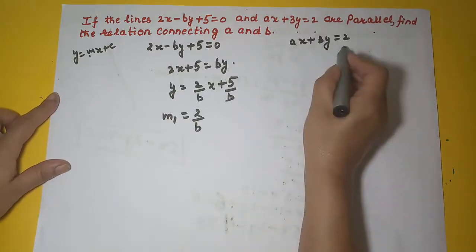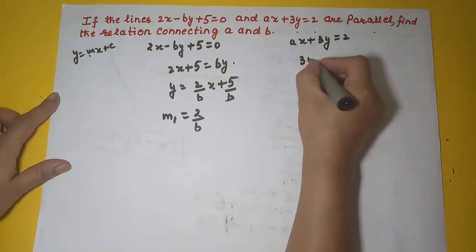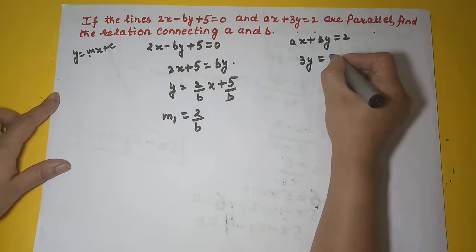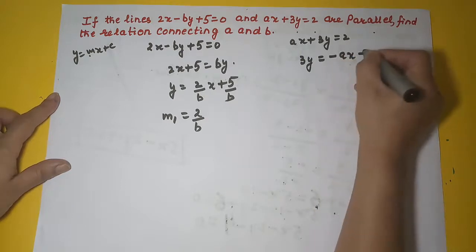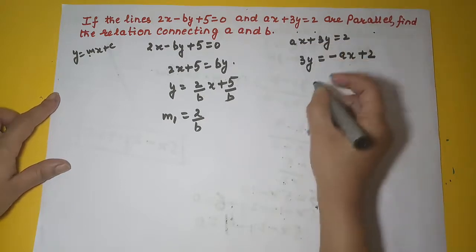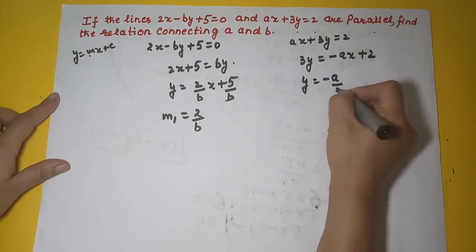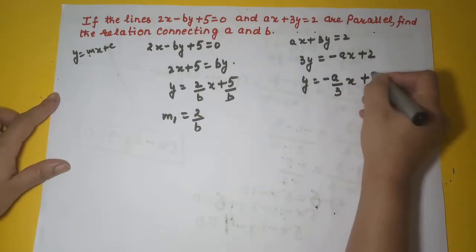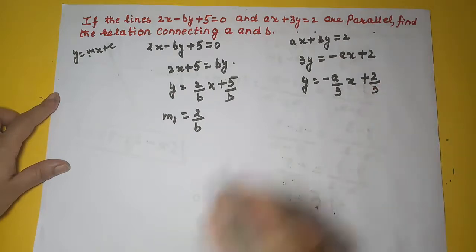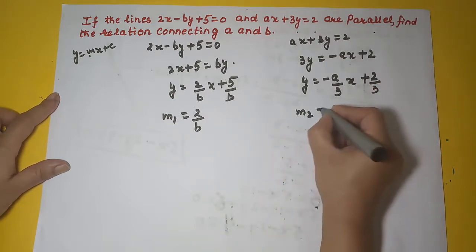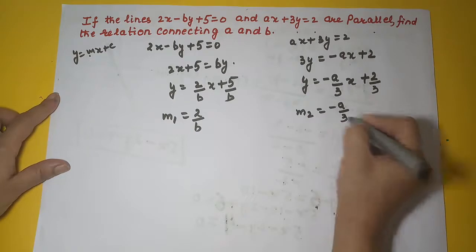Let's come here. So we have here 3y is equal to minus ax plus 2. We have shifted this ax to this side. So my y will become minus a upon 3 into x plus 2 upon 3. So what is my m2 here? Minus a upon 3.